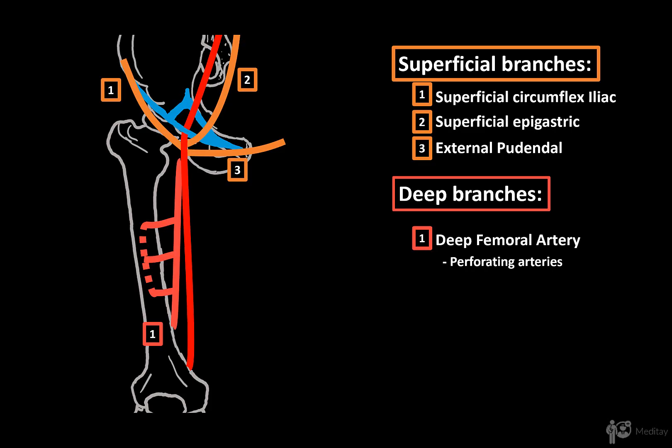Then there's the lateral circumflex artery, going anteriorly and dividing into three branches to supply the muscles of the anterior compartment of the thigh. The ascending branch will communicate with the other side branch of the deep femoral artery, the medial femoral circumflex artery, which supplies the medial muscles of the thigh and forms an anastomotic connection around the hip joint to supply it.